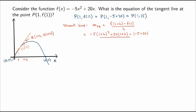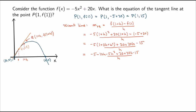Now I do some simplifications. First I expand the square: (1 + h)² = 1 + 2h + h². I also distribute the 20. Then -5 + 20 gives 15, so I subtract 15. Distributing the -5 gives -5 - 10h - 5h² + 20 + 20h - 15, all over h.